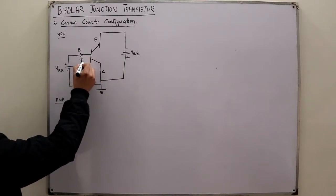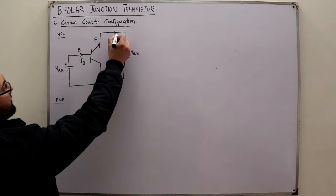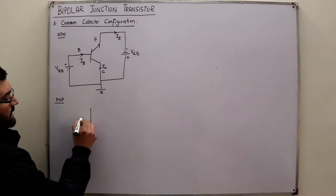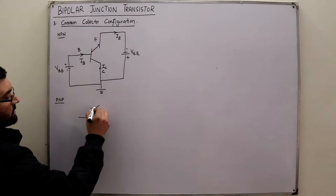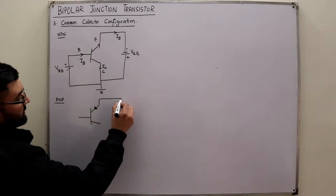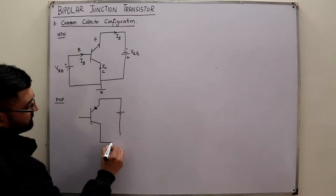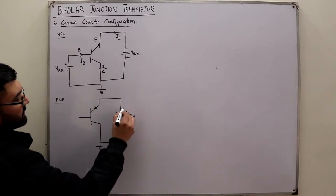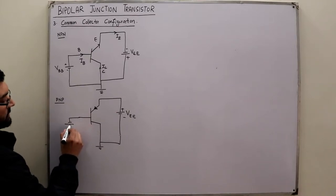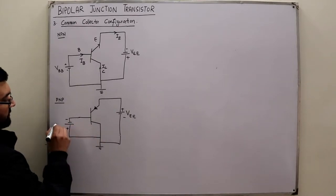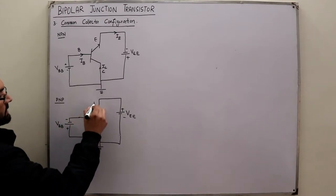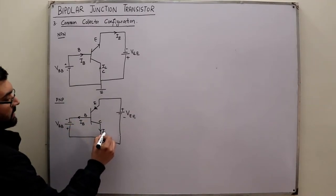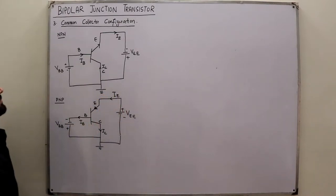For the NPN transistor, the base current is the entering current, the emitter current is the leaving current, and the collector current is the entering current. For a PNP transistor, the polarities reverse: VEE goes from plus to minus, VBB is negative-positive. The base current would leave, the collector current would leave, and the emitter current would enter.